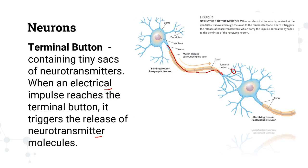The axon of one neuron is connected to the dendrite of the receiving neuron. The neuron that sends information is known as the presynaptic neuron, while the neuron that receives information is known as the postsynaptic neuron. Eventually, the postsynaptic neuron will have to send it to another neuron, so the postsynaptic neuron in turn will become the presynaptic, and the neuron that receives the information will become the postsynaptic.